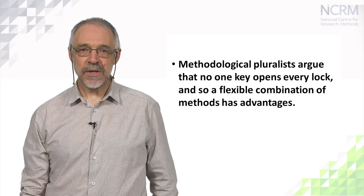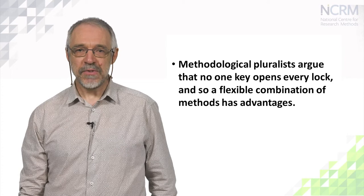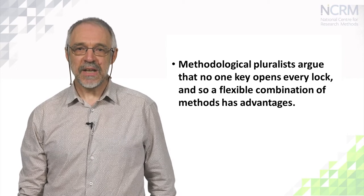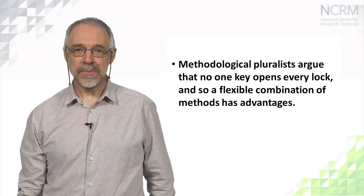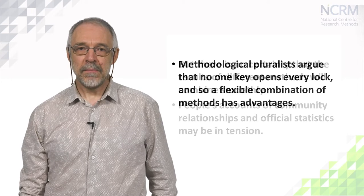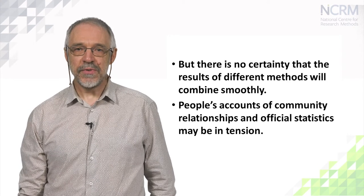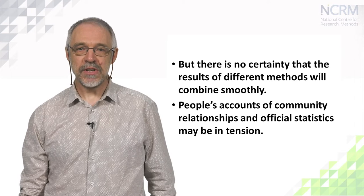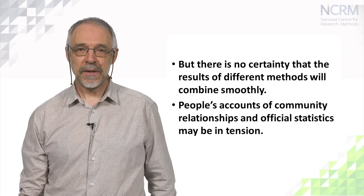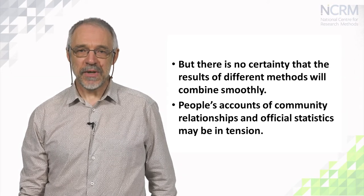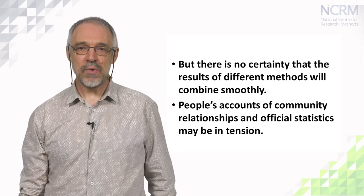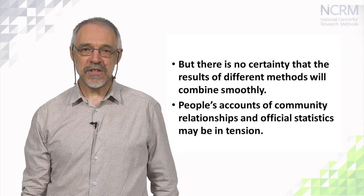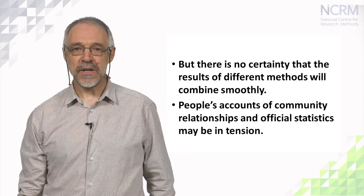Methodological pluralists argue that no one key opens every lock, and so a flexible combination of methods has advantages. But there's no certainty that the results of different methods will combine smoothly in one coherent interpretation of the data. People's accounts of community relationships as like one big happy family may be at odds with data about inequality and conflict, for example.